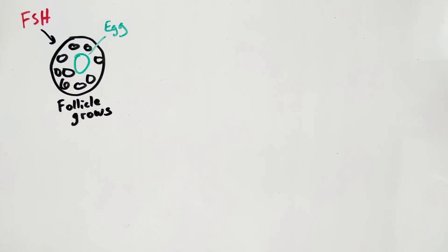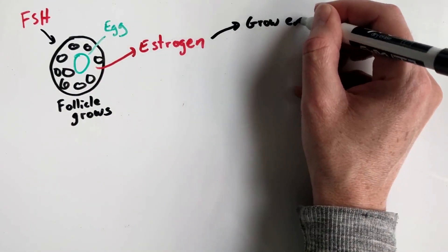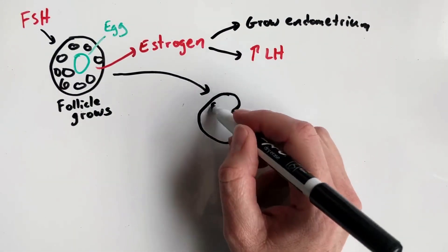The growing follicle releases estrogen, which tells the endometrium to grow. Estrogen also signals the anterior pituitary to release more LH, which triggers ovulation, the release of an egg.